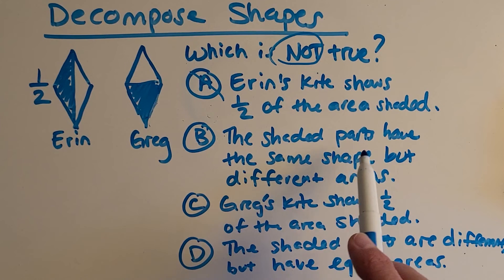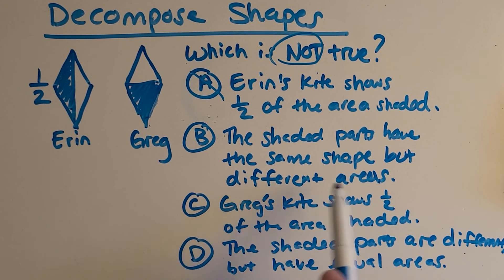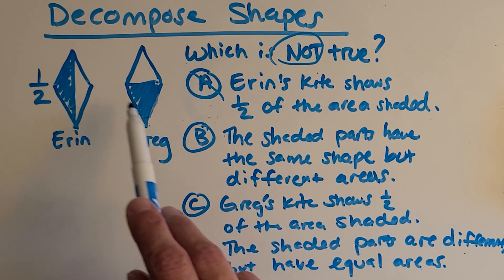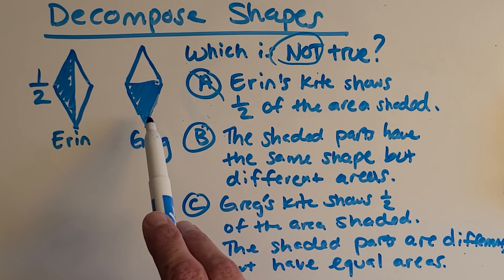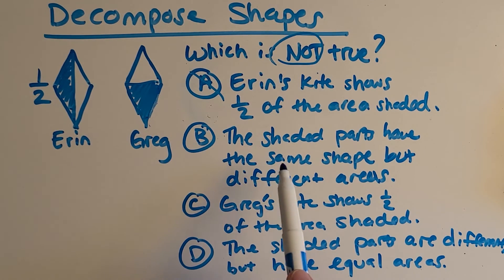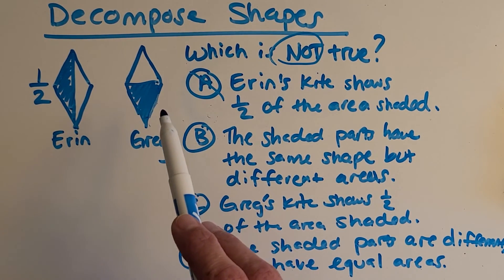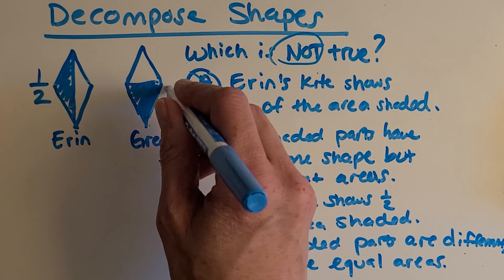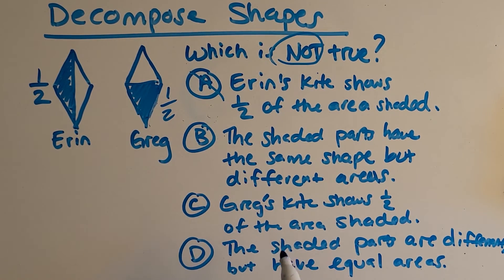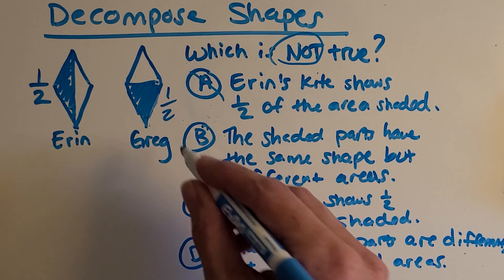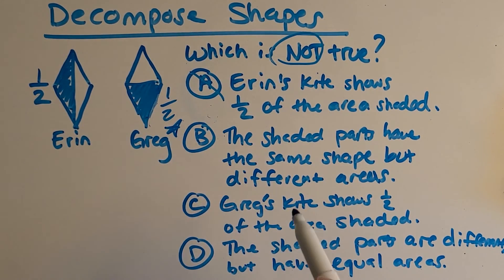Alright, B. The shaded parts have the same shape, but different areas. So let's look at these shaded parts. Are they the same shape, but different areas? Oh, you might be thinking that one seems a little off. Both of them, what fraction is Greg's kite showing? Well, that's also showing half of the shape, so it sounds like they might have the same areas. Well, let's put a little star next to this one. I always like to do that when I'm kind of leaning towards a choice, but I want to double check the rest of the choices.